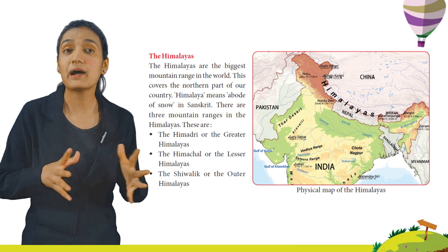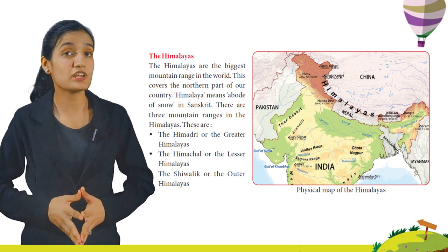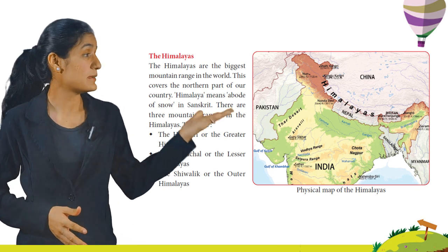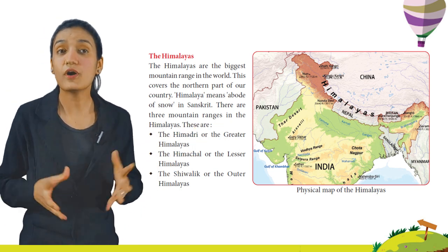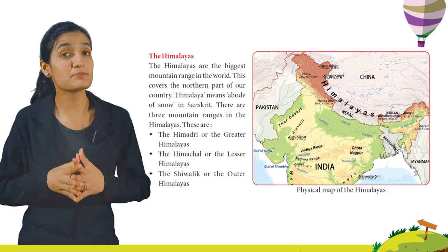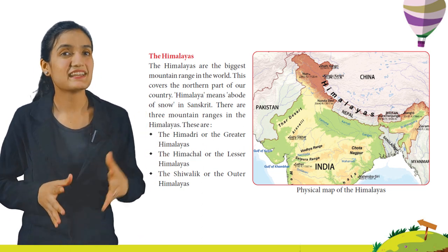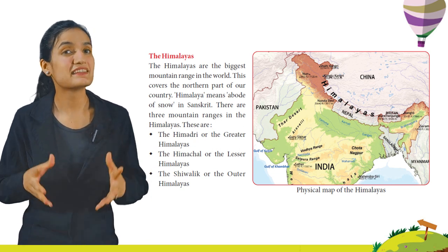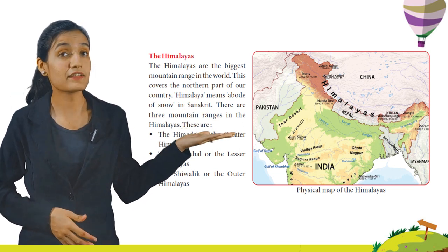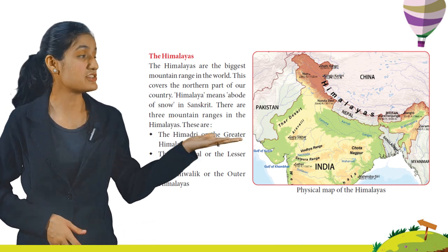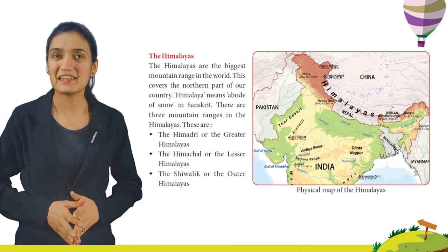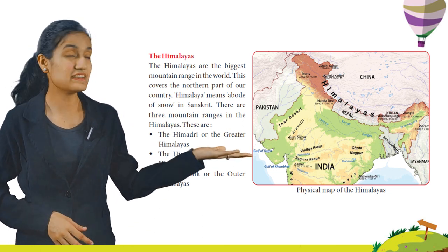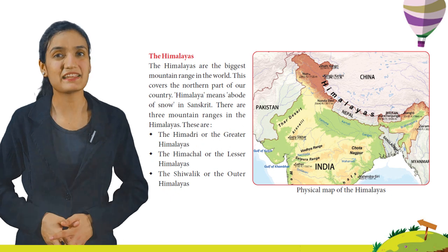The Himalayas are the biggest mountain range in the world. This covers the northern part of our country. Himalayas means 'abode of snow' in Sanskrit. There are three mountain ranges in the Himalayas: the Himadri or the Greater Himalayas, the Himachal or the Lesser Himalayas, and the Shivalik or the Outer Himalayas. Here you can see a physical map of the Himalayas.